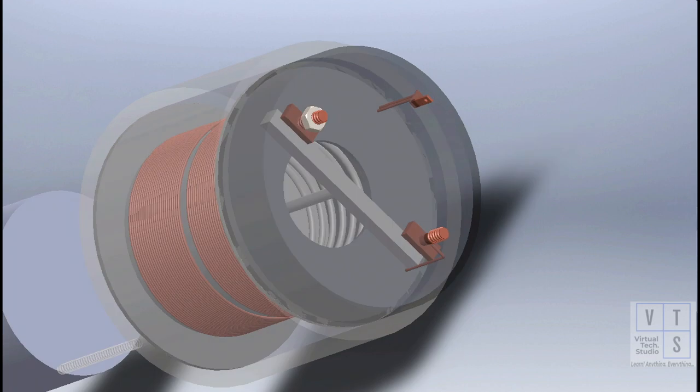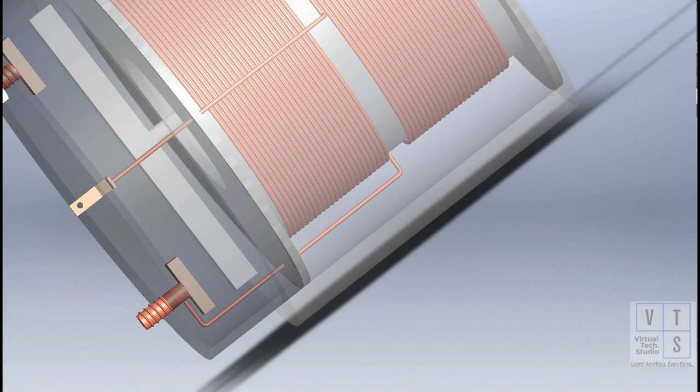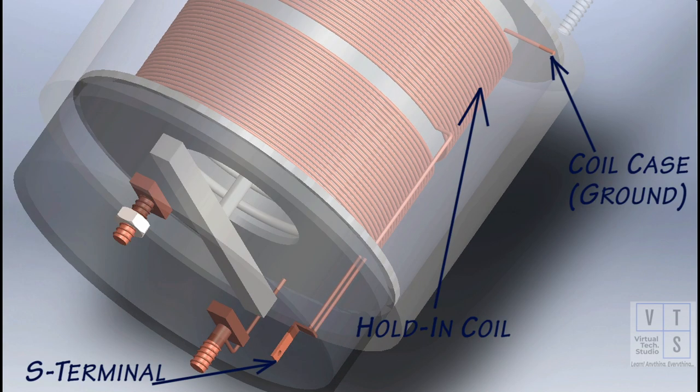There are two coils inside the magnetic switch: the pull-in and the hold-in coil. The pull-in coil connects between the S and M terminals. The hold-in coil connects between S terminal and ground through the coil case.